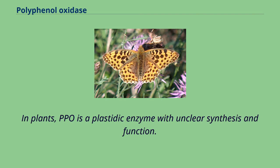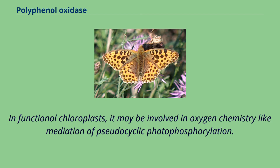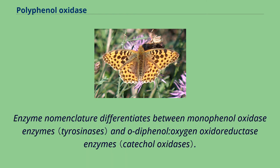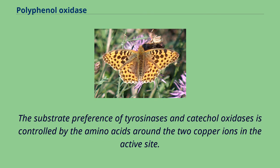In plants, PPO is a plastidic enzyme with unclear synthesis and function. In functional chloroplasts, it may be involved in oxygen chemistry like mediation of pseudocyclic photophosphorylation. Enzyme nomenclature differentiates between monophenol oxidase enzymes and O-diphenol oxygen oxidoreductase enzymes. The substrate preference of tyrosinases and catecholoxidases is controlled by the amino acids around the two copper ions in the active site.